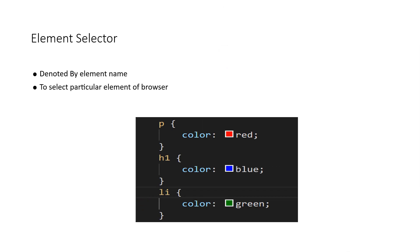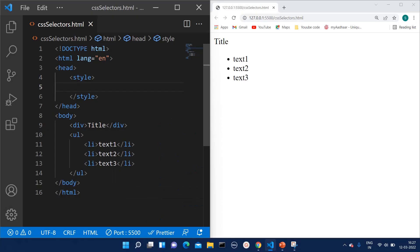The element selector is used when we want to give style to a particular element on the HTML. As you can see in the screenshot, I have mentioned a particular element and given some styling to it. Whenever you want to select any element, you can just mention the name of that element followed by the styling properties you want to give. The next type of CSS selector is the element selector, used when we want to select a specific element on the HTML.